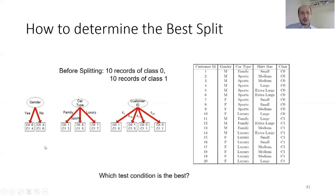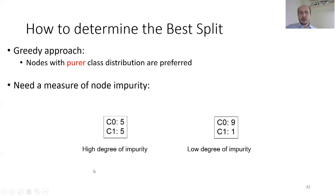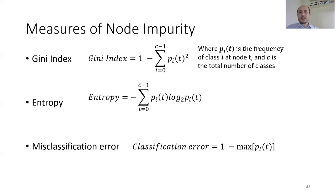Here we see some examples: depending on gender, we have a two-way split; depending on car type, a three-way split; and depending on customer ID, more than three ways. The question is which attribute gives the best split at each step. A greedy approach is used, preferring nodes with purer class distributions. Measures of node impurity include the Gini index, entropy (Shannon entropy), and misclassification error. These measures are used to decide which attribute to use for splitting.